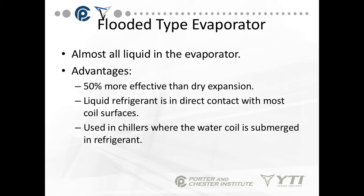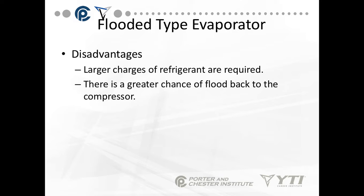The flooded type evaporator is almost all liquid inside — basically full of liquid refrigerant — and as it boils off it returns to the compressor. The more liquid in the evaporator, the better the efficiency. Flooded type evaporators are 50% more efficient than dry expansion, with liquid refrigerant in contact with most coil surfaces. They're used heavily in chillers. The disadvantages are that more refrigerant is required and there's a greater chance of liquid flood back to the compressor.